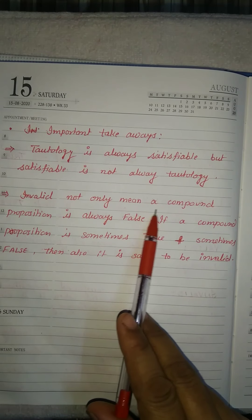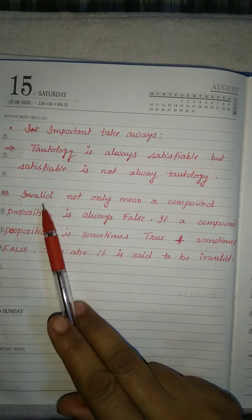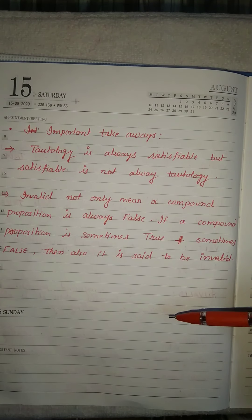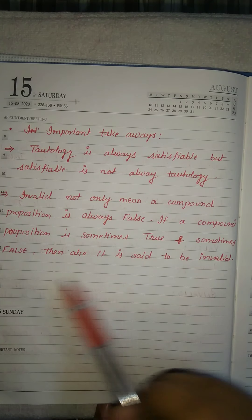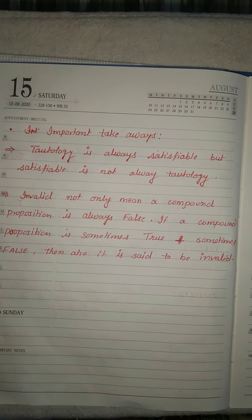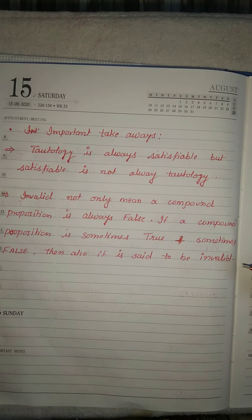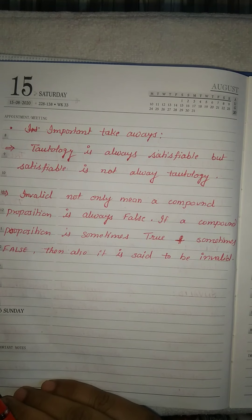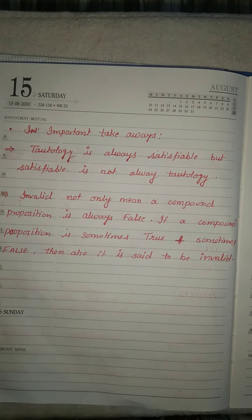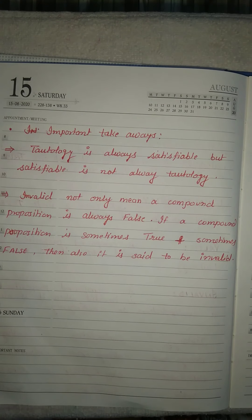Invalid does not only mean a compound proposition is always false. Invalid means not all 0s are present in your truth table. If a compound proposition is sometimes true and sometimes false, it is also said to be invalid — that is, the contingency form is also known as invalid. I hope these terms are clear to all of you.